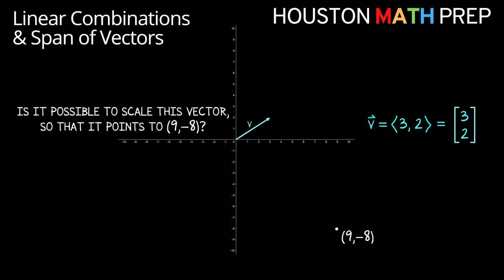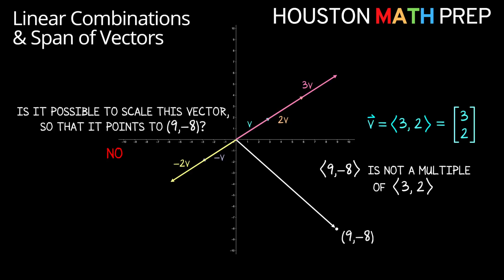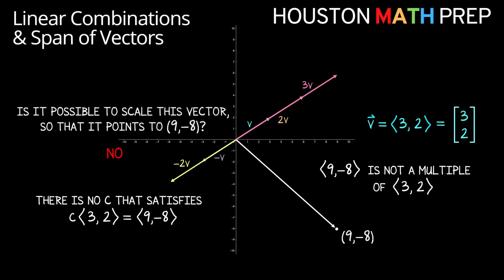If we run through some possibilities: 2 times vector v will point in the same direction but just be twice as long. Scaling vector v by a factor of 3 again just makes it longer, still in the same direction. Using a negative multiple of vector v gives us a vector that points in the opposite direction. So we would all agree that no, there's no way to scale vector v so that it points to 9 comma negative 8, since 9 comma negative 8 is not a multiple of the vector 3 comma 2.